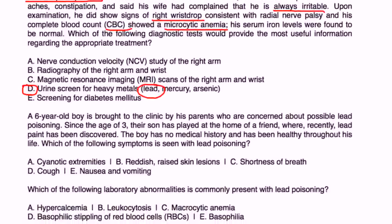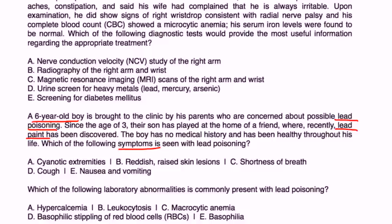Final two vignettes: A 6-year-old boy is brought to clinic by parents concerned about possible lead poisoning — since age three he has played at a friend's home where lead paint has been discovered. Which symptom is seen with lead poisoning? Patients can develop many symptoms, but one of the more common ones is nausea and vomiting, usually because of cerebral edema. Which lab abnormality is commonly present? The red blood cells will have small dots in the periphery representing ribosomes — that is known as basophilic stippling.